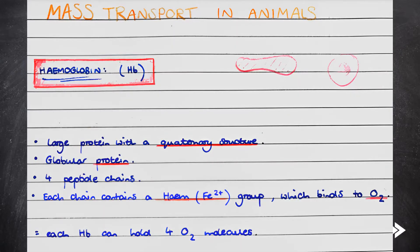Let's start off with an overview of haemoglobin, which can also be abbreviated as Hb. Haemoglobin is a large globular protein with a quaternary structure, meaning that it is made up of more than one polypeptide chain.